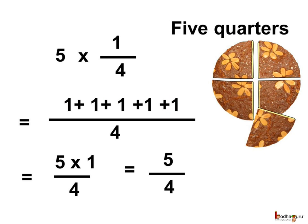Let's take another example. Aman bought 5 quarters of a pound cake. 5 times quarter means 5 multiplied by quarter, which is 1 by 4. Here we add five 1 fourths. Again, we add the numerators only: 1 plus 1 plus 1 plus 1 plus 1 divided by 4. This we can write as 5 times 1 by 4.